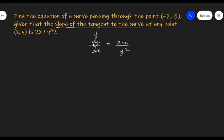So this is another way of giving us the differential equation and we have to calculate the equation of the curve passing through the point (-2, 3).